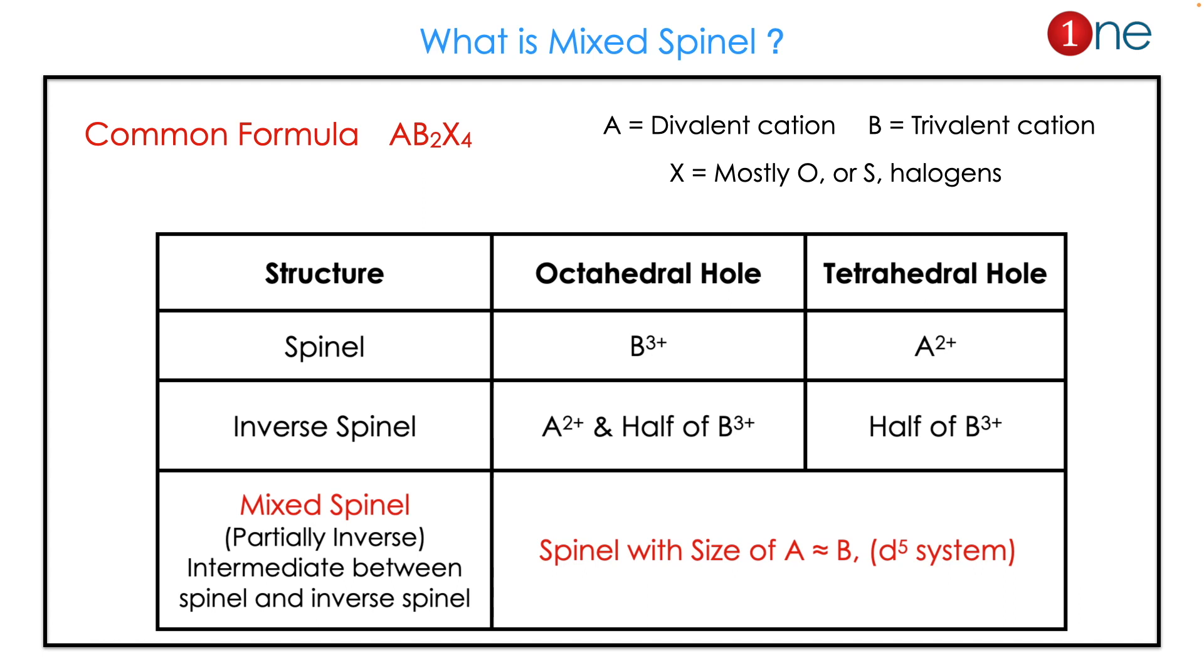A is divalent, B is trivalent cation, X is mostly oxygen and sulfur. In spinel you have high charge in octahedral, low charge in tetrahedral. Inverse it is totally opposite. Mixed spinel is the system which is in between spinel and inverse spinel. You can say it's partially inverse also.